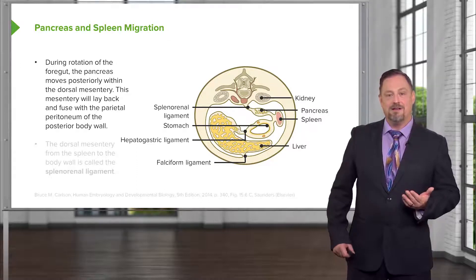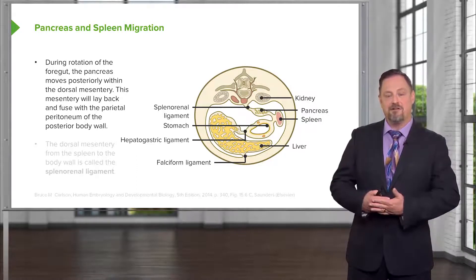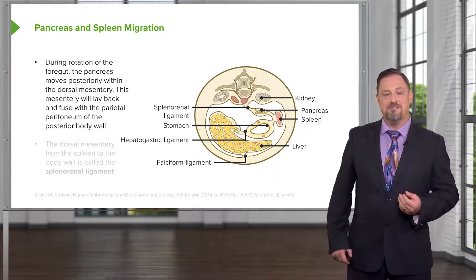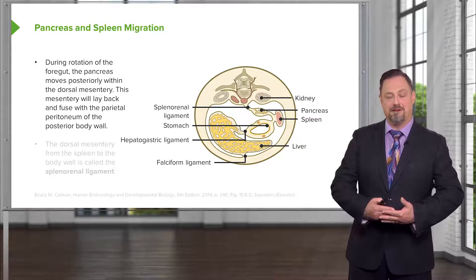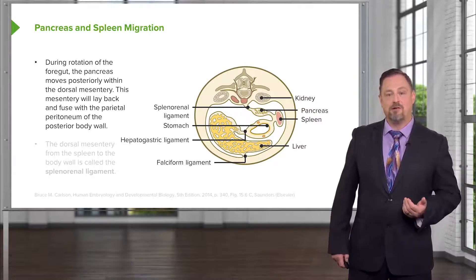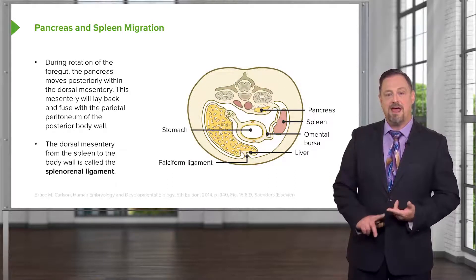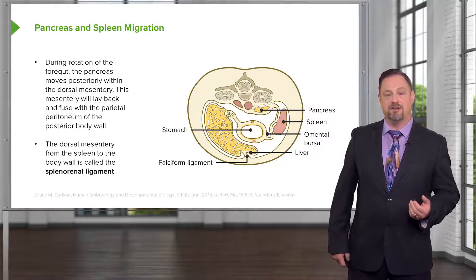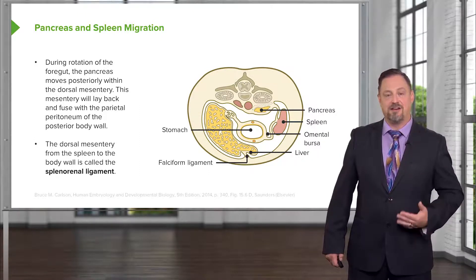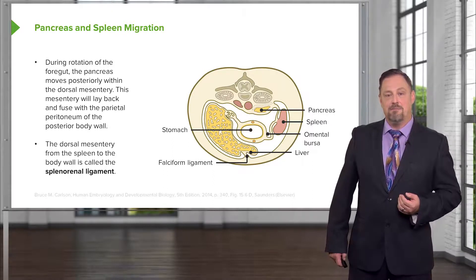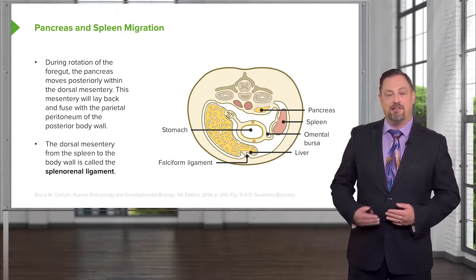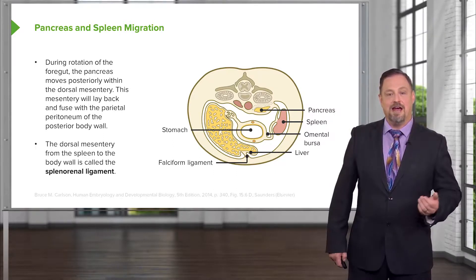Now, as the greater omentum is forming, we have a fusion of other regions of the mesentery. The pancreas and spleen develop partially within the dorsal mesentery of the body, but as the space in the abdomen becomes tighter and tighter, the pancreas and spleen get pushed towards the posterior body wall. As that occurs, the mesentery of the pancreas is going to fuse with the mesentery lining the posterior body wall. When that happens, the pancreas will become secondarily retroperitoneal — it's no longer freely hanging inside the abdominal cavity but is stuck to the posterior body wall. And the connection of mesentery between it and the spleen will then be called the splenorenal ligament, because the left kidney is very close by, and following that ligament posteriorly will take you into the vicinity of the left kidney and its connection to the spleen.